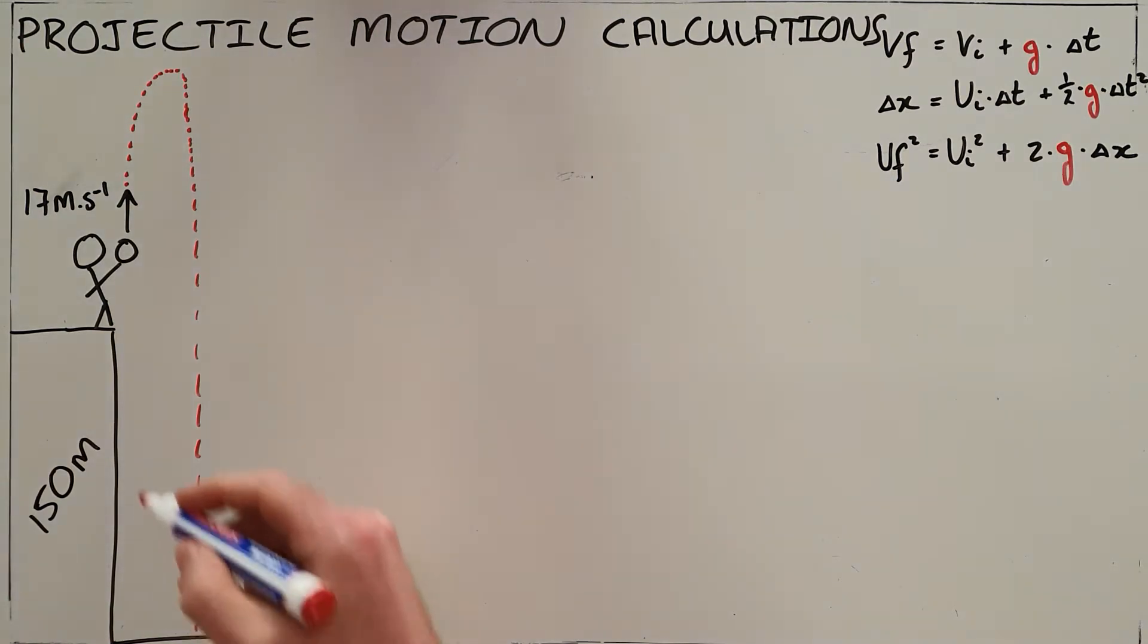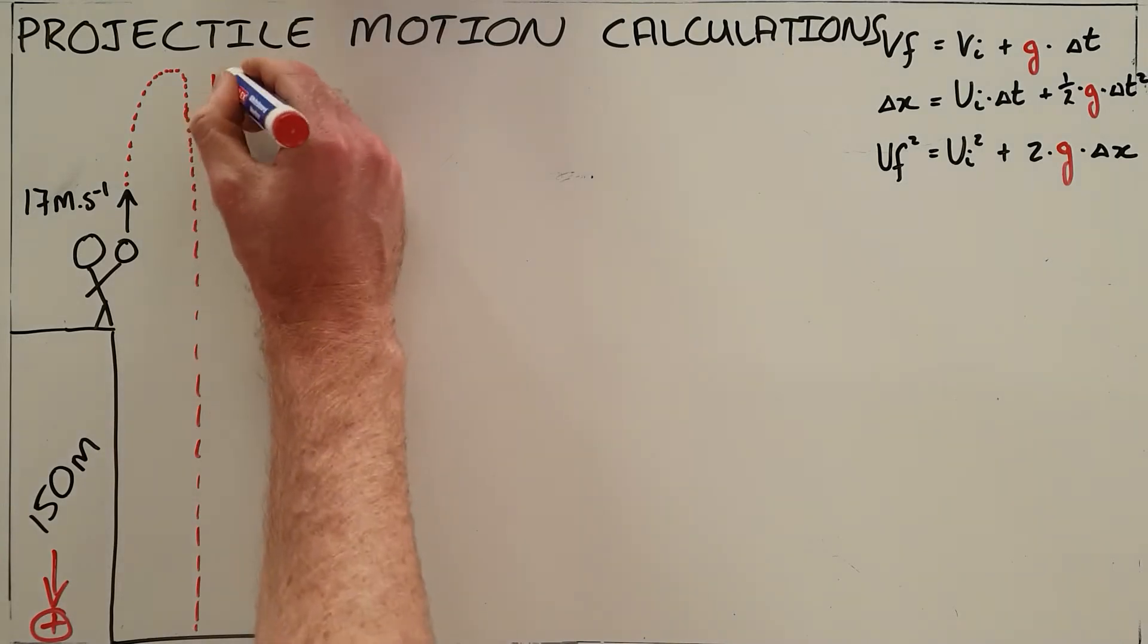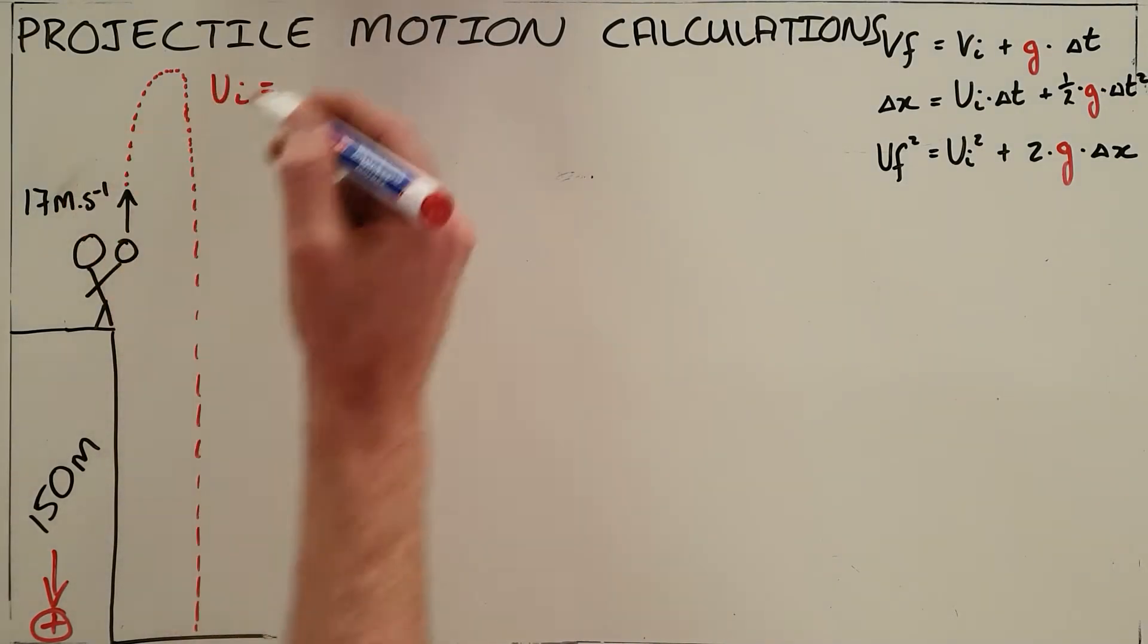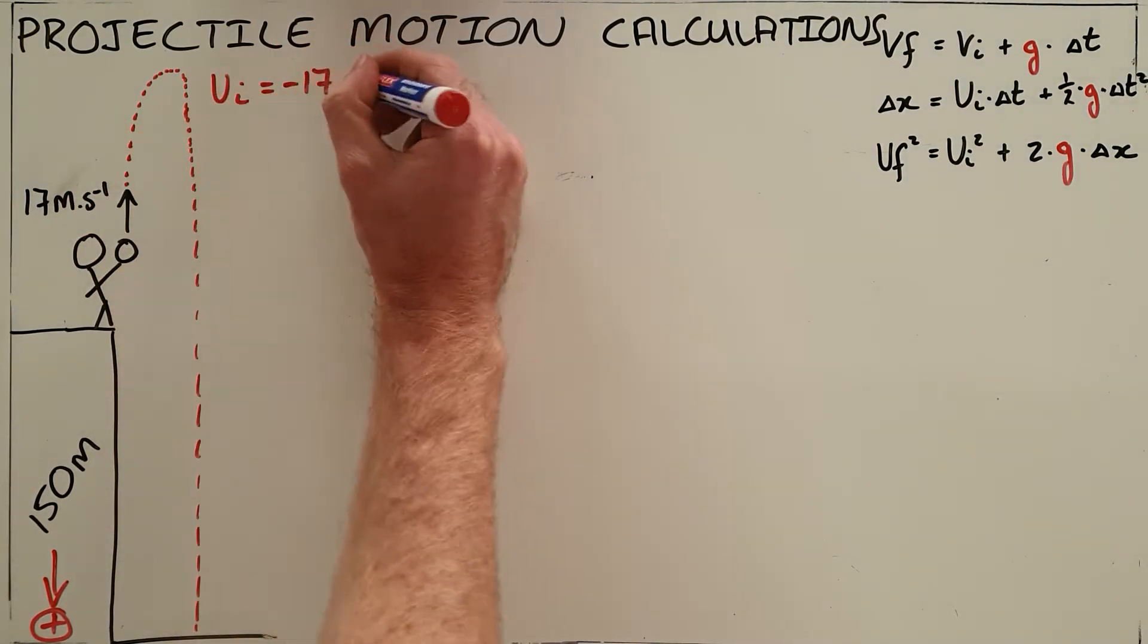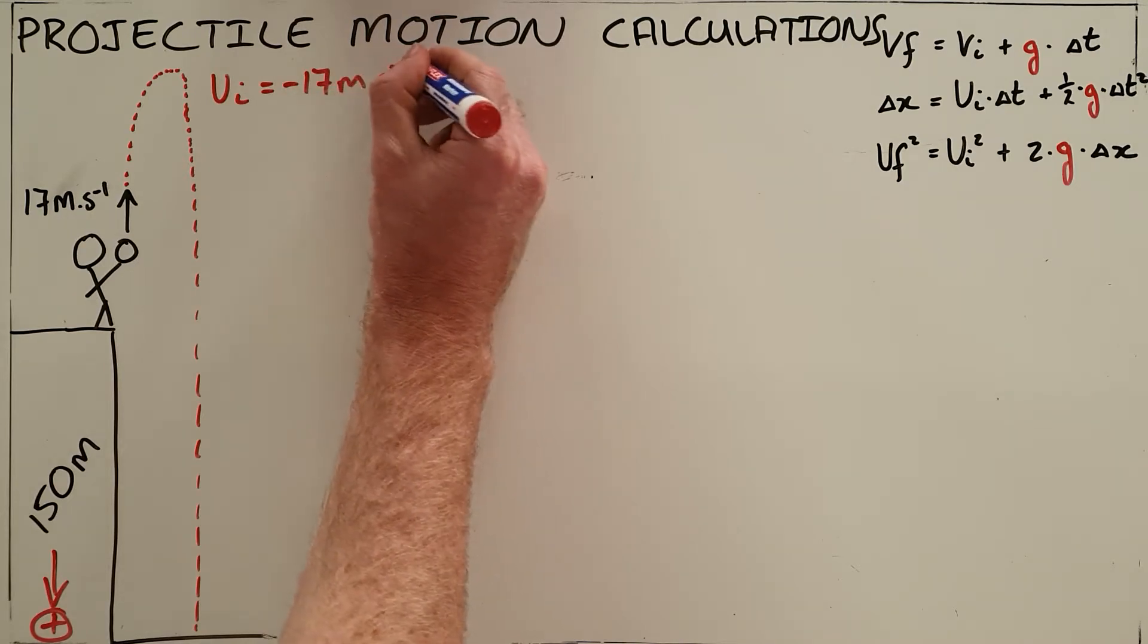Our first step here, the first thing we need to do, is define a reference direction. I'm going to choose downward as my positive direction, which immediately tells me that that initial velocity, because it is upward, is actually negative 17 meters per second.